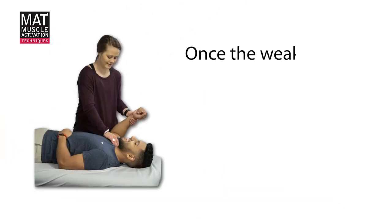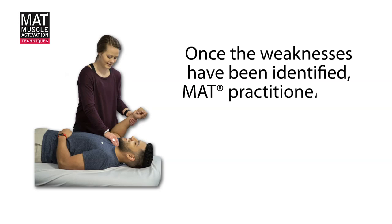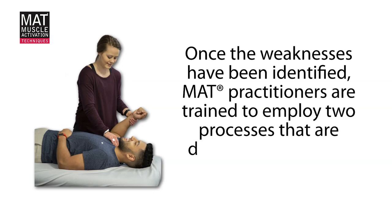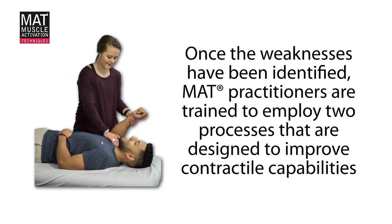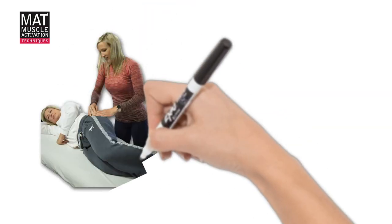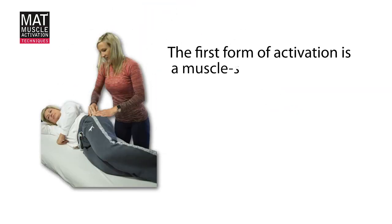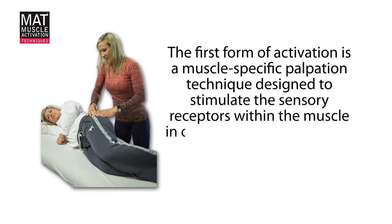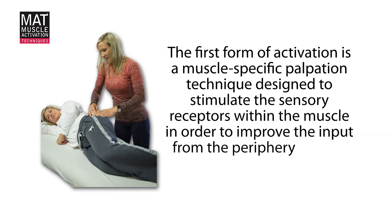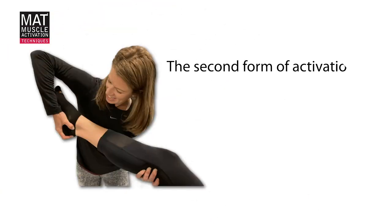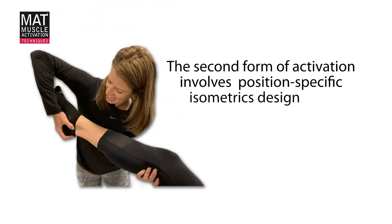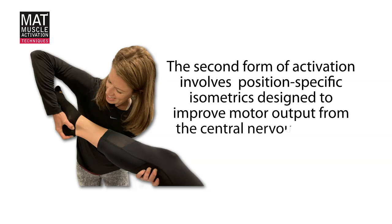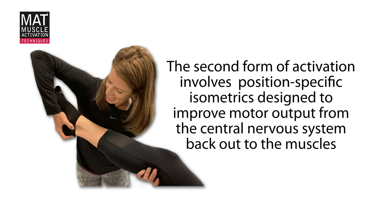Once the weaknesses have been identified, MAT practitioners are trained to employ two processes that are designed to improve contractile capabilities. The first form of activation is a muscle-specific palpation technique designed to stimulate the sensory receptors within the muscle in order to improve the input from the periphery back to the central nervous system. The second form of activation involves position-specific isometrics designed to improve motor output from the central nervous system back out to the muscles.